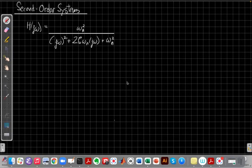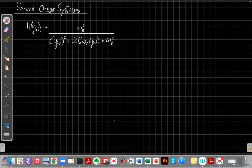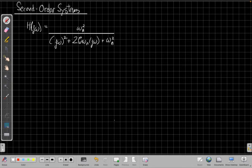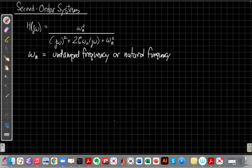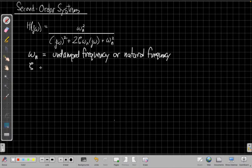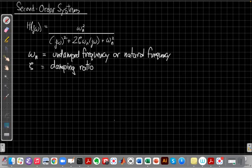We'll find second-order systems are easiest to analyze when we put them in the standard form shown here, where h(jω) = ω_n² / [(jω)² + 2ζω_n(jω) + ω_n²]. It's important to be clear here, ω_n is a constant in this form. The constant ω_n is the undamped or natural frequency, that's why we put the n on it. And the second parameter ζ, which is this sort of funny squiggle, is the damping ratio.